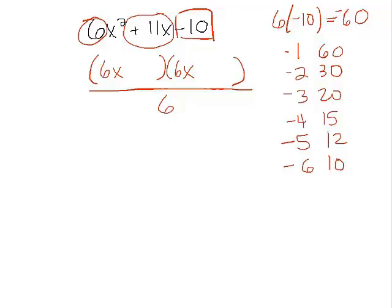Right? So we get a positive sum. Now, which of these add up to positive 11? Only this one. So let's use those right here. Negative 4 and positive 15. Alright.